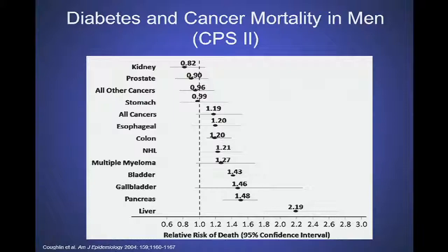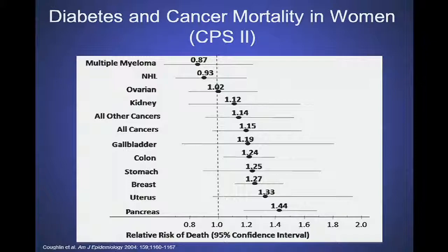In diabetes specifically, you see increased cancer risk - liver cancer is markedly increased, as is pancreatic cancer. A lot of cancers are increased in diabetic patients. In women, uterine, pancreatic, and breast cancer are all increased significantly.